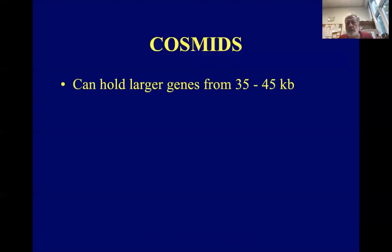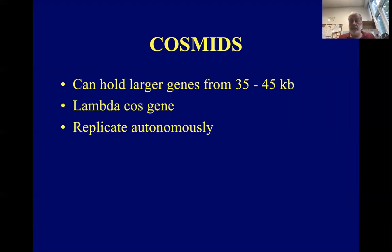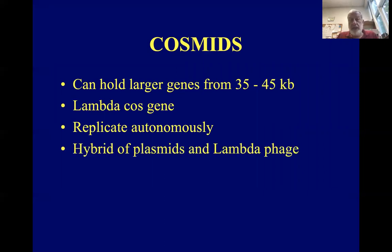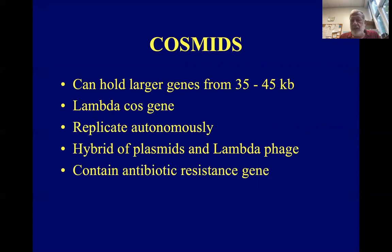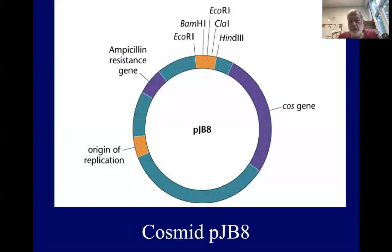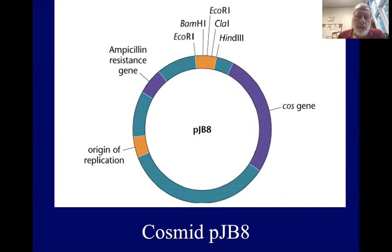Cosmids are vectors that can hold larger inserts up to 45,000 base pairs in size. They contain the ability to replicate autonomously and are sort of a hybrid of plasmids and lambda phage. They also contain resistance genes. Here's plasmid PJB8, showing a polylinker region at the top, origin of replication lower left, and an ampicillin resistance gene as a selectable marker on the upper left.